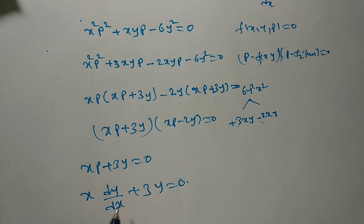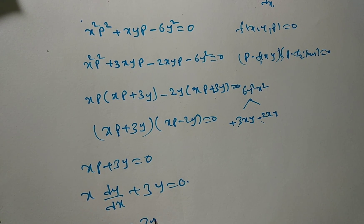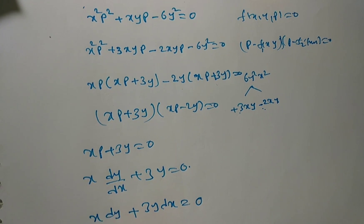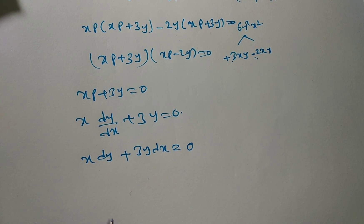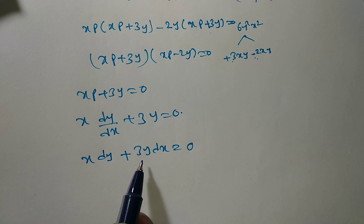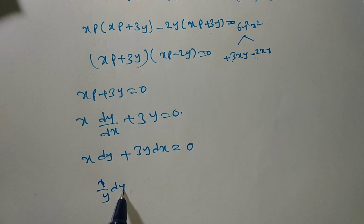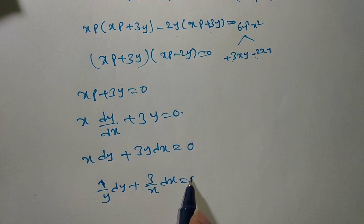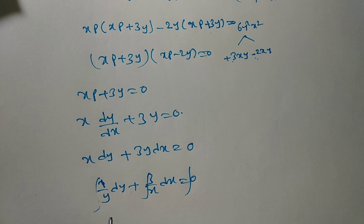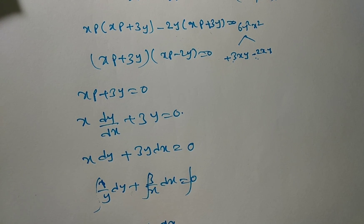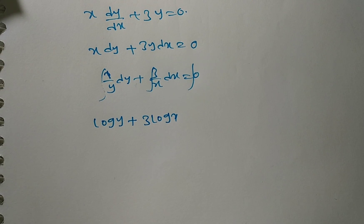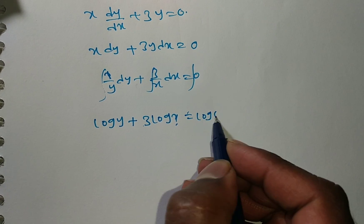Rearranging: x dy plus 3y dx equals zero. Cross-multiplying to separate variables: 1/y dy plus 3/x dx equals zero. Integrating both sides: log y plus 3 log x equals log c.